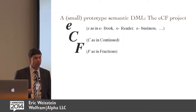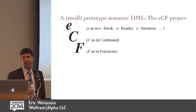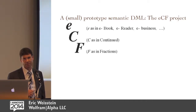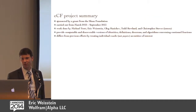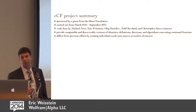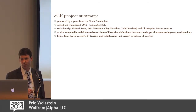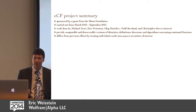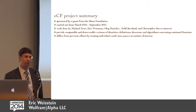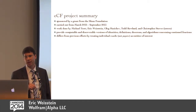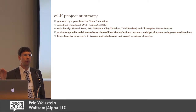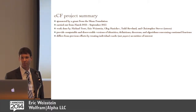To try to convince you that this is actually feasible — because it's a fairly difficult problem — I want to talk about the work that my colleagues and I did over the last year, which is a small prototype digital library called ECF, where E is the usual E as in e-book, and CF stands for continued fraction. This was sponsored by a small grant from the Sloan Foundation, carried out over a year and a half by a small number of researchers. It differs from previous efforts in the sense that it focuses on individual results as entities, not on papers as entities, which is how traditional mathematicians and librarians are used to thinking about such things.